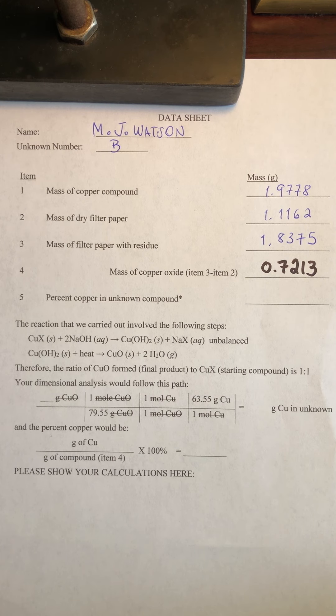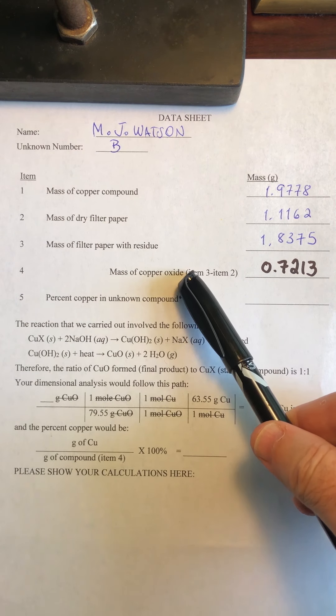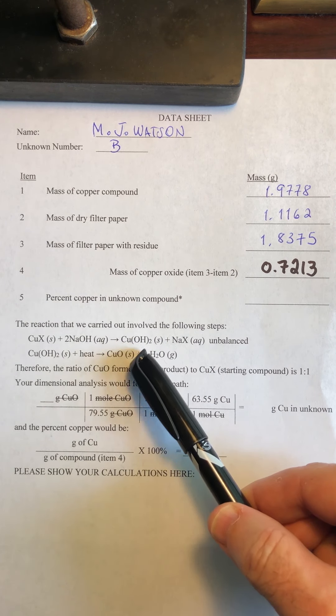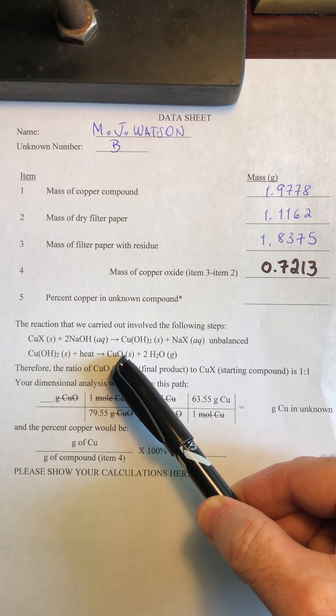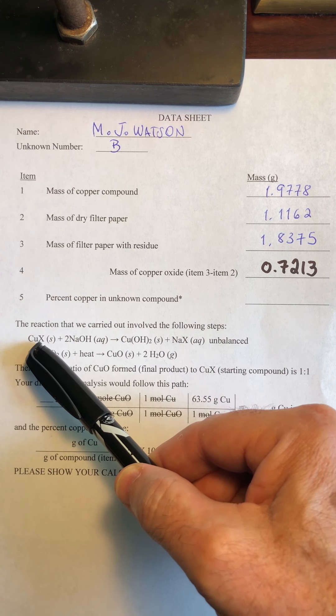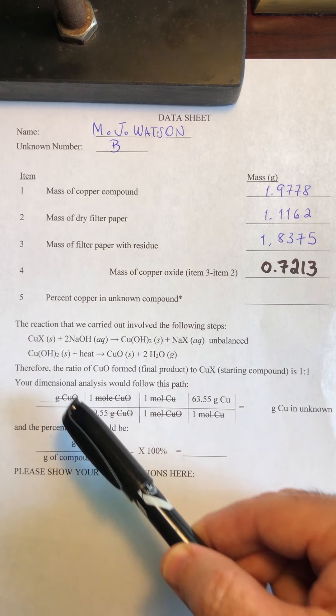So the first we're going to calculate is how many grams of copper are in the unknown. Remember, all of the copper in the copper oxide product has to have come from my original compound. That's because of conservation of mass.